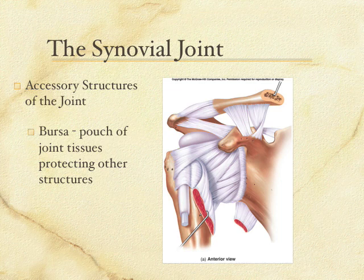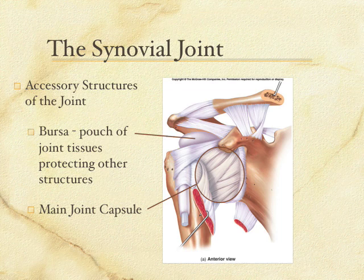Here's a picture of the bursa at the shoulder. You can see all of the bits of connective tissue holding the humerus into the shoulder blade. Right up here between the bone above the humerus, this little white area represents a bit of synovial membrane and connective tissue that pouches out and protects the superior part of the humerus from bumping and rubbing against the structure above. This is a bursa right here. The main joint capsule is here, and the bursa is out to the side. You should know what a bursa is.